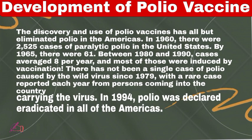The discovery and use of the polio vaccine has all but eliminated polio in America. In 1960, there were 2,525 cases of paralytic polio in the United States. But in 1965, there were only 61. Between 1980 and 1990, cases averaged 8 per year, and most of those were induced by vaccination itself.